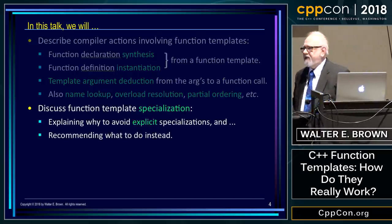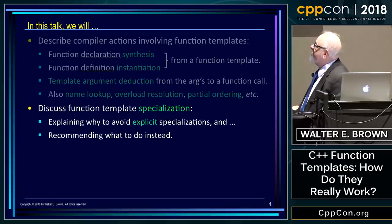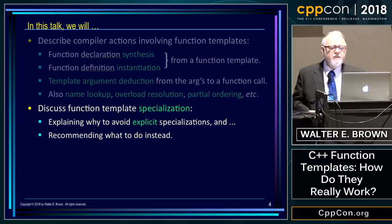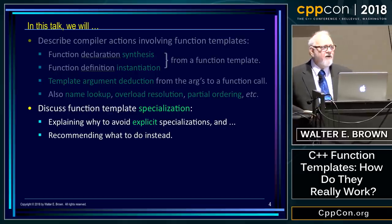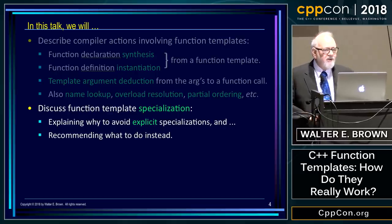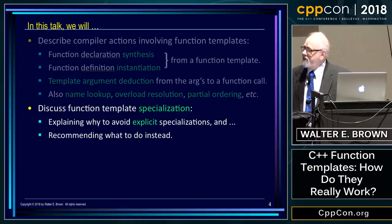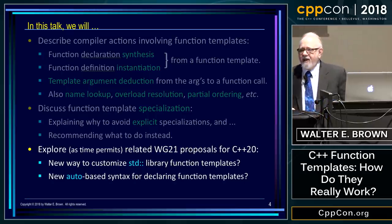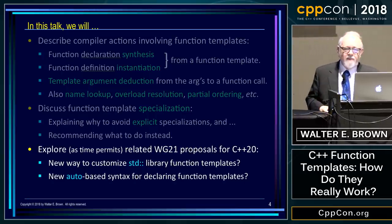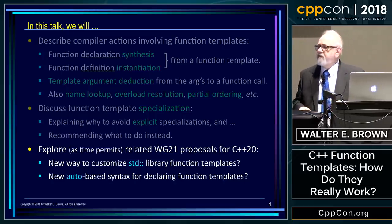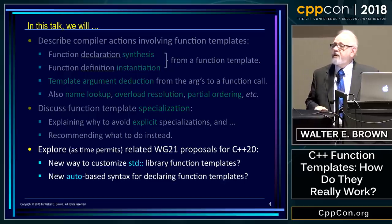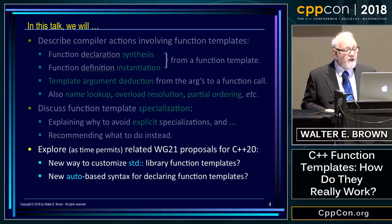We will also discuss function template specialization, and in particular why explicit specialization is probably not a good idea for programmers to do, and we'll make some recommendations about what you can do instead. Toward the end, as time permits, we'll talk a little bit about the future of function templates, including a proposal under discussion for C++20 in the core language and another one in the standard library.